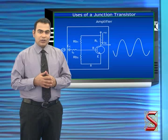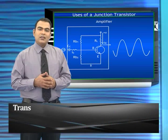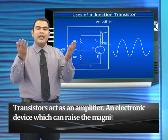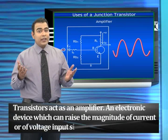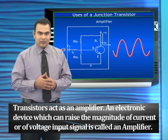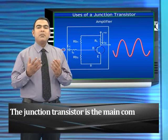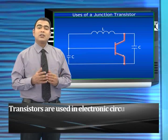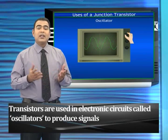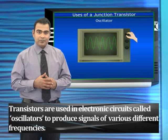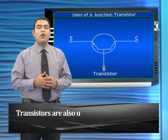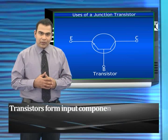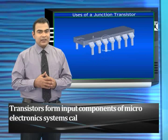Transistors act as amplifiers. An electronic device which can raise the magnitude of a current or voltage input signal is called an amplifier. The junction transistor is the main component in an amplifier circuit. Transistors are also used in electronic circuits called oscillators to produce signals of various frequencies, and in stabilized power supplies.